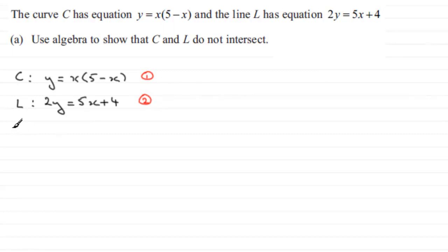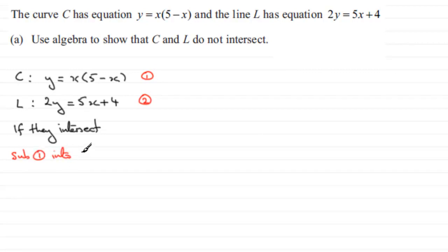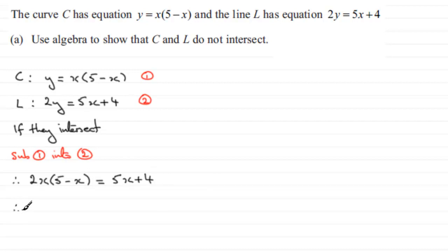If they intersect, then there should be a solution for both of these equations that hold simultaneously. I can substitute equation 1 into equation 2. If we do that, we've got 2 times whatever y is — so that's x multiplied by 5 minus x — and that's going to equal 5x plus 4. So I'm going to expand the bracket, and I get 10x minus 2x squared equals 5x plus 4.